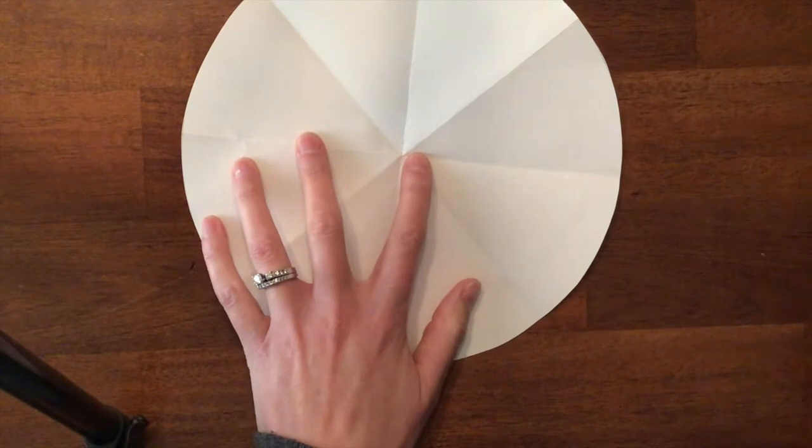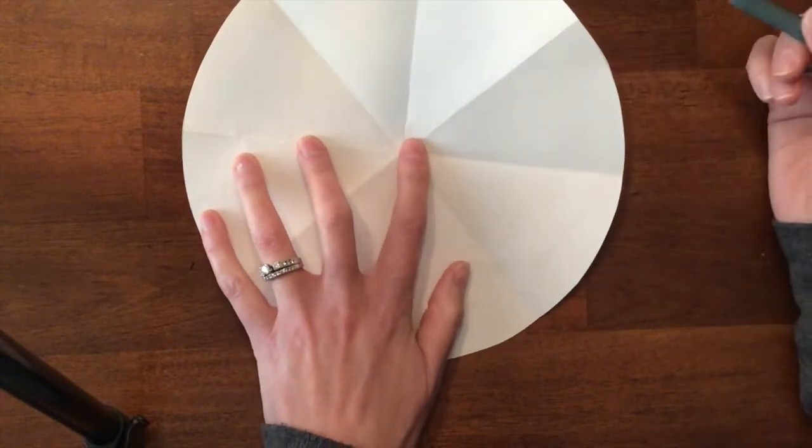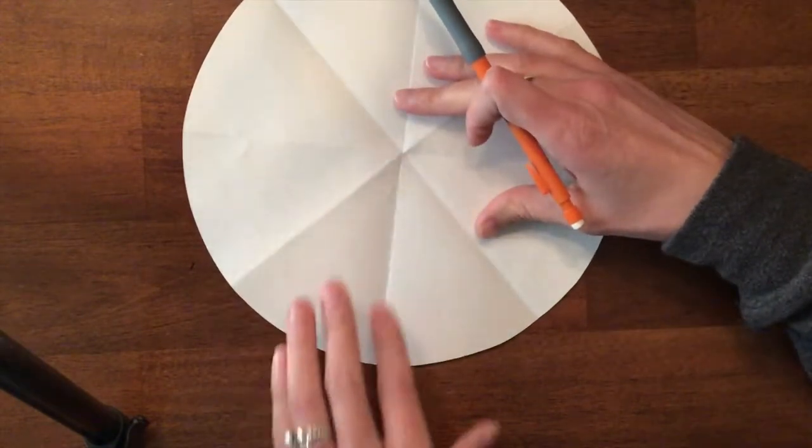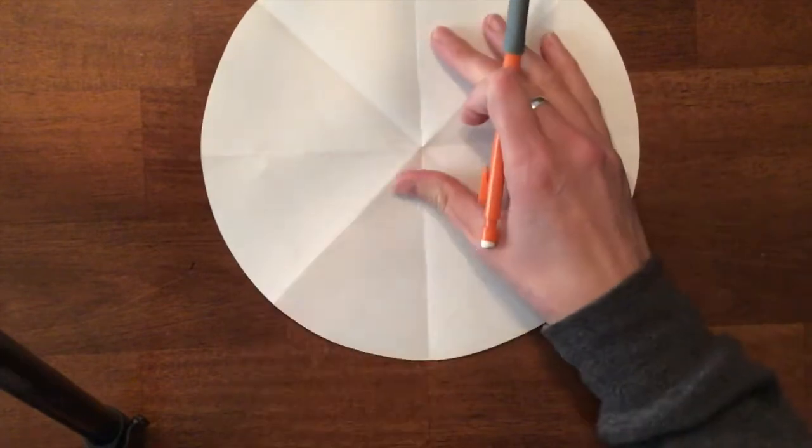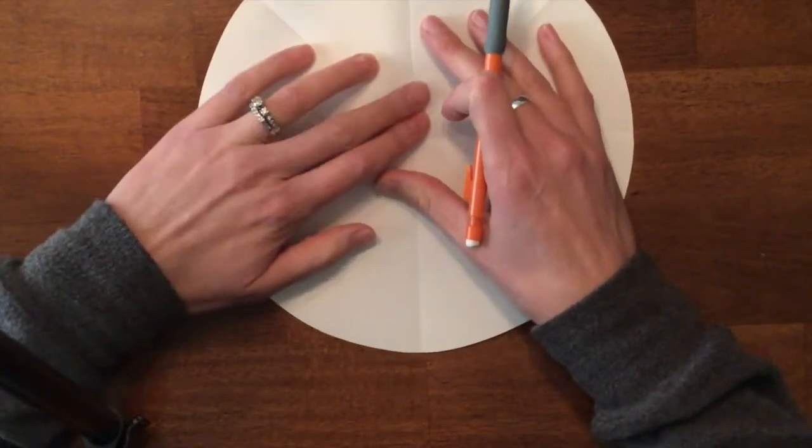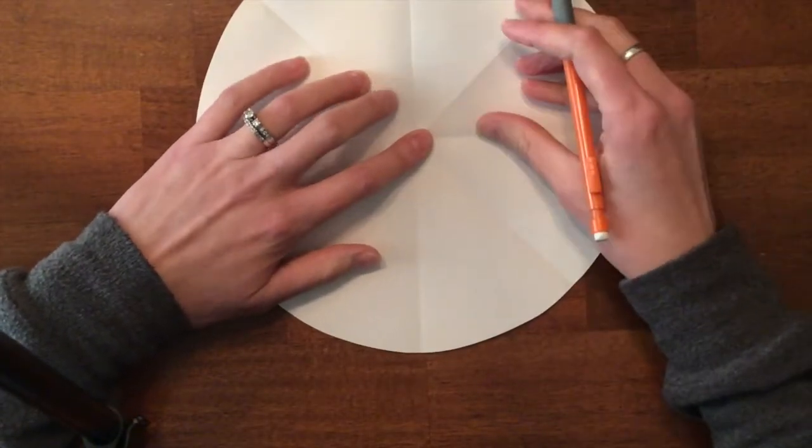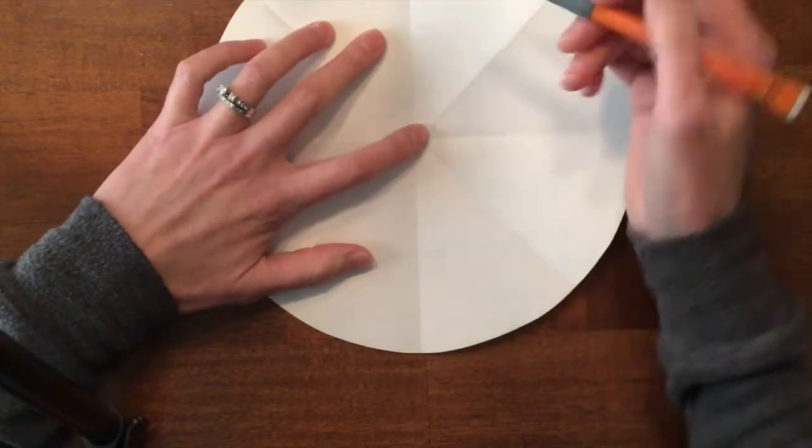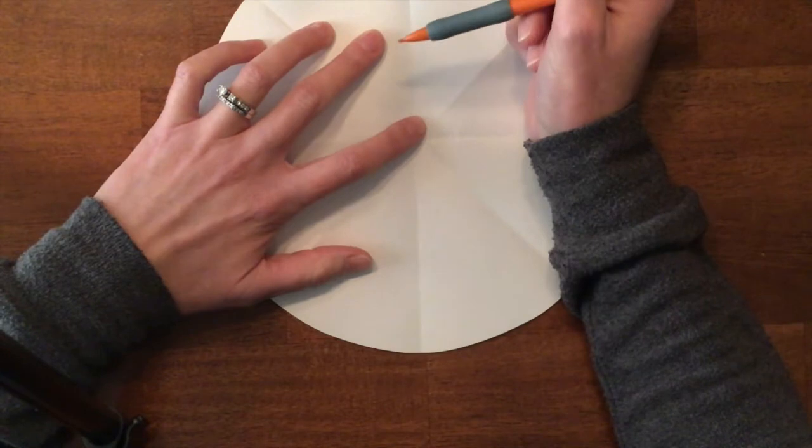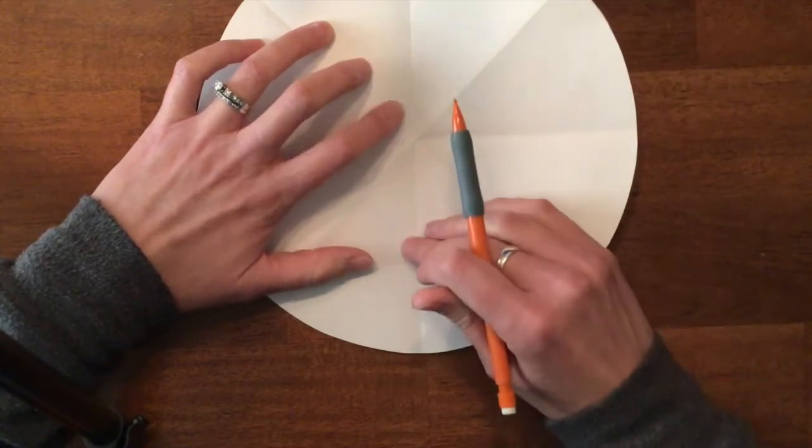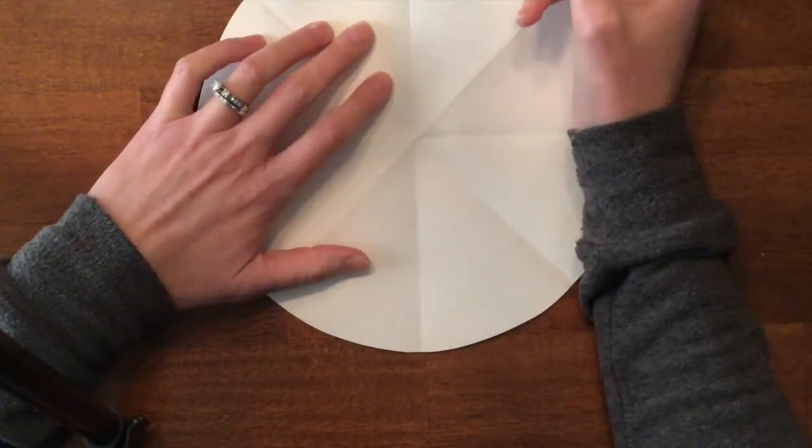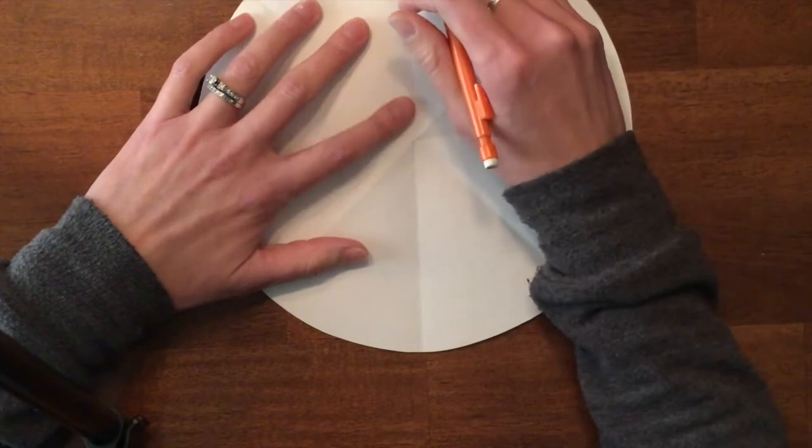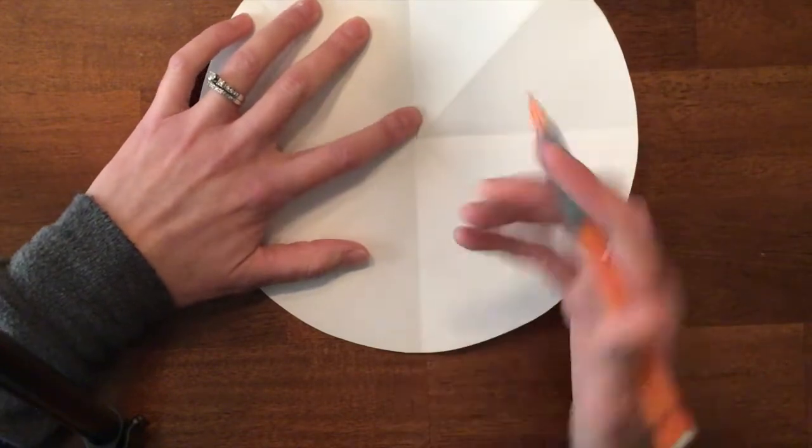Now this is going to allow me to make my snowflake be that radial symmetrical or radial symmetry like I had told you about before. So what I'm going to do is just start drawing lines, but I'm using the creases that I have. And whenever I draw something, I have to draw the same thing on the other half of my circle.